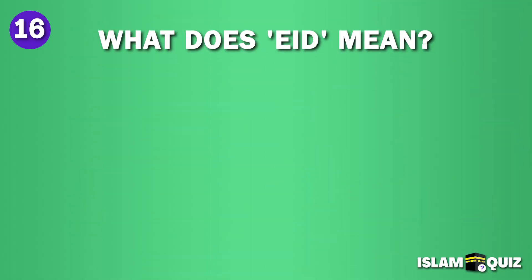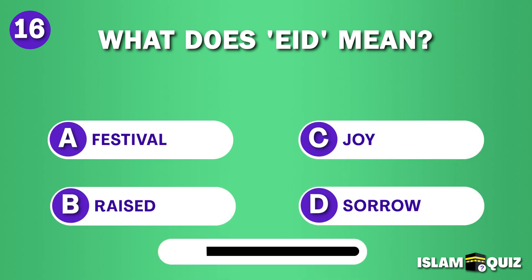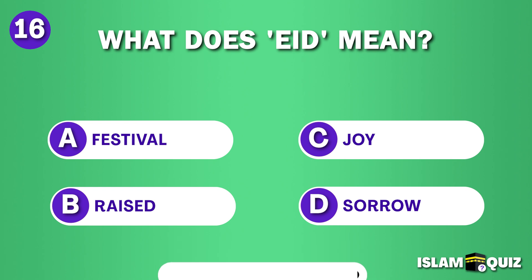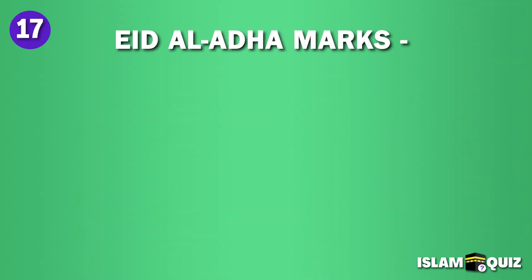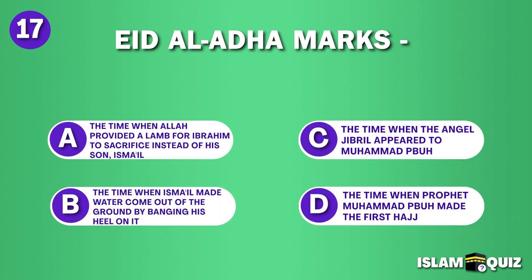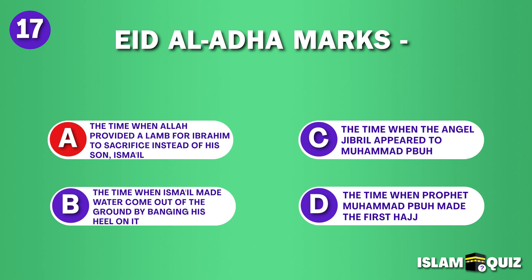What does Eid mean? Festival. The time when Allah provided a ram for Ibrahim to sacrifice instead of his son Isma'il.